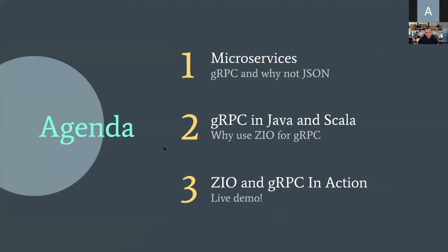Our agenda for today: we are going to talk about microservices in general, how you set them up, why they're useful, and how you get them to talk to each other. I'd recommend using something like gRPC and explain why you should avoid JSON. We'll then look at solutions available for Java and Scala, justify why we need a new Zio-based solution, and finish with live coding of an example application built with Zio and gRPC.